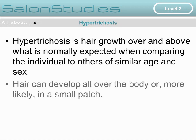Hypertrichosis. Hypertrichosis is hair growth above and beyond what is normally expected when comparing it to other people of a similar age and sex. Hair can develop all over the body, or more likely in small patches and areas.